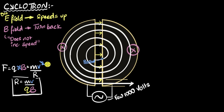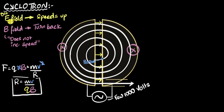Now the question we want to answer in this video is: which of the two fields decides the speed at which the particle comes out? In other words, if I want to increase the speed at which the particle is shot out, which of the two fields should I be increasing? Should I increase the electric field, or the magnetic field, or both?